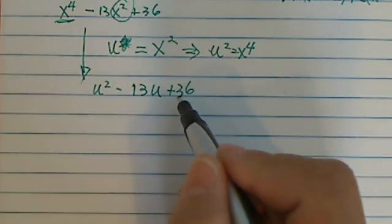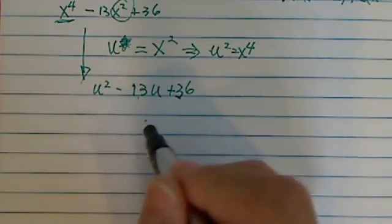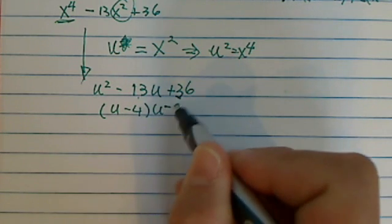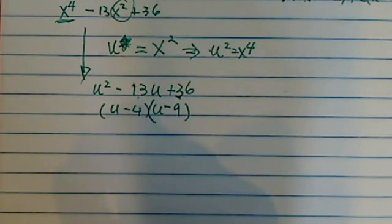Here it's pretty easy. 36, you have 4 and 9. That will give you what you need. Minus 4 minus 9, that gives you positive 36. When you add them, you have minus 13.